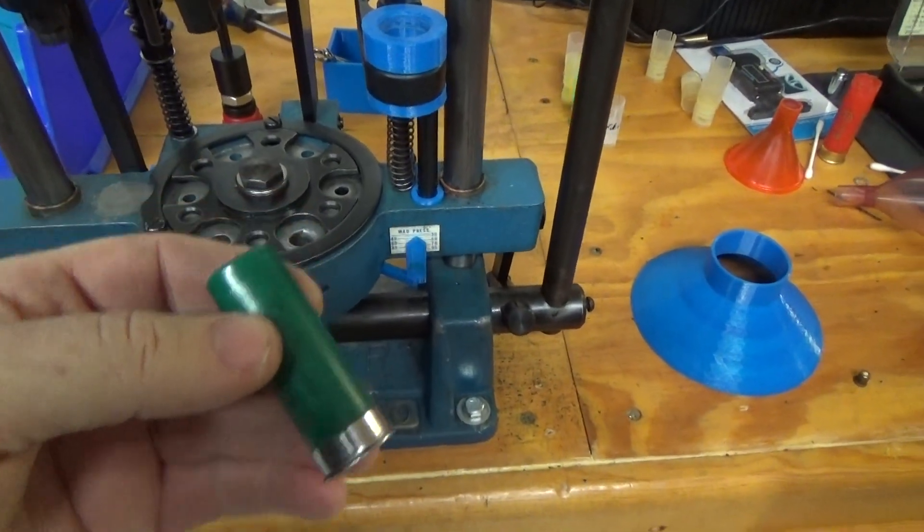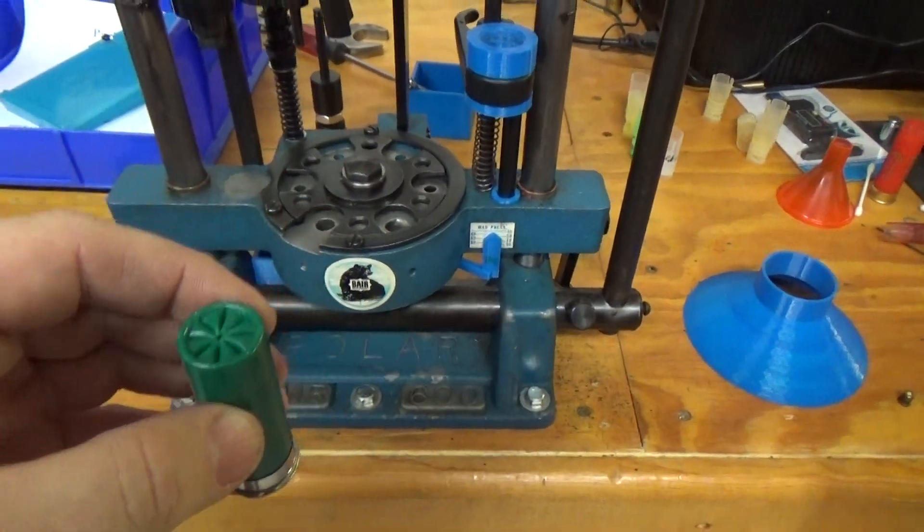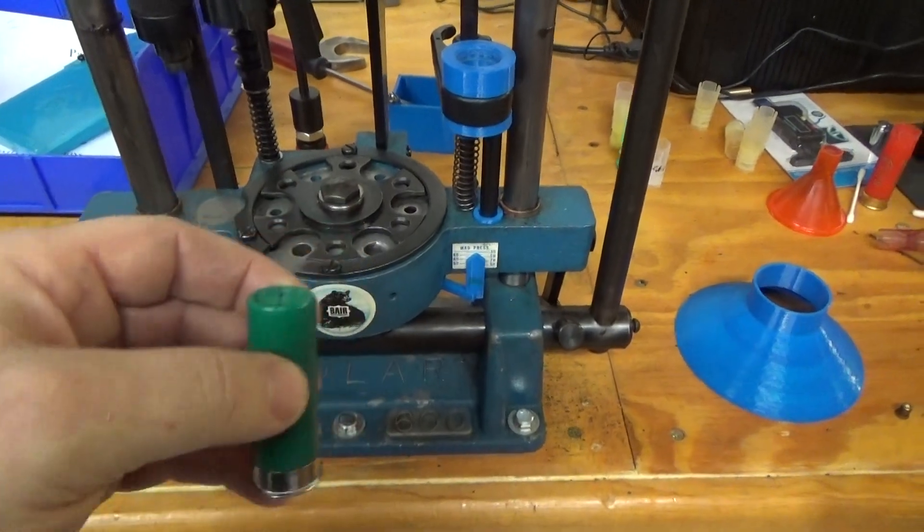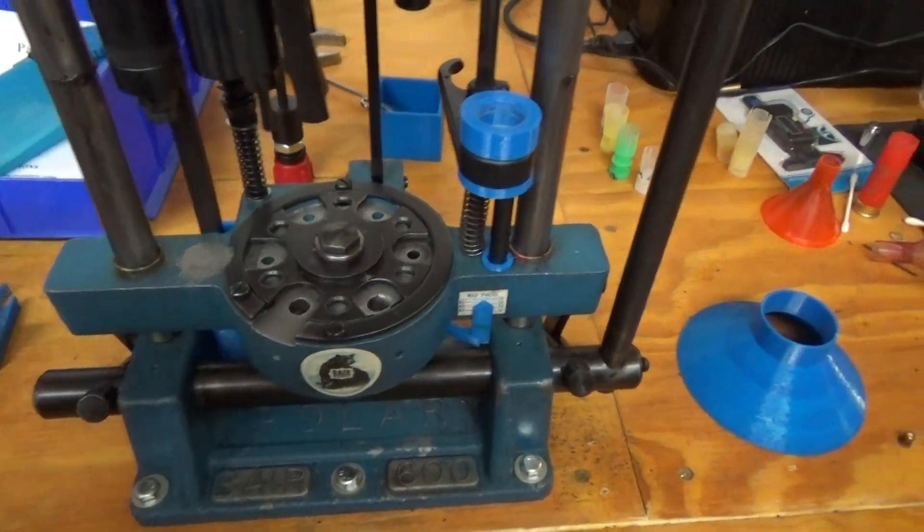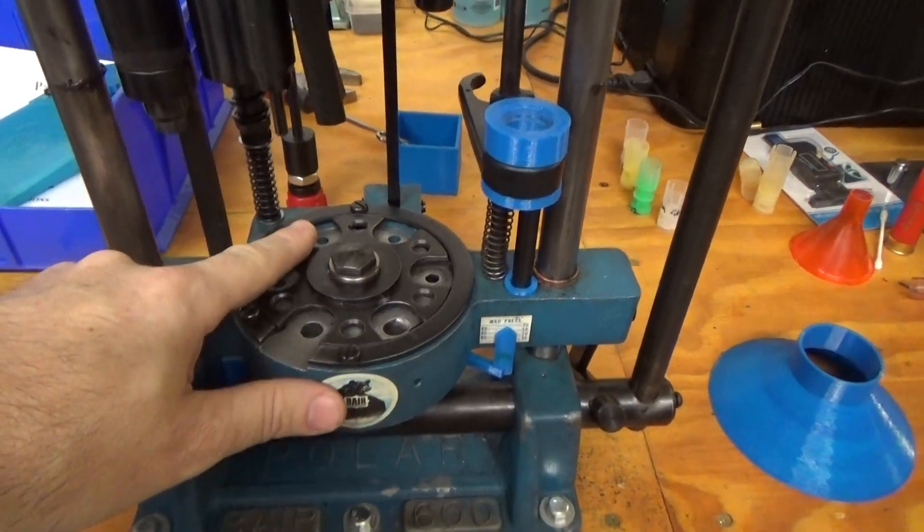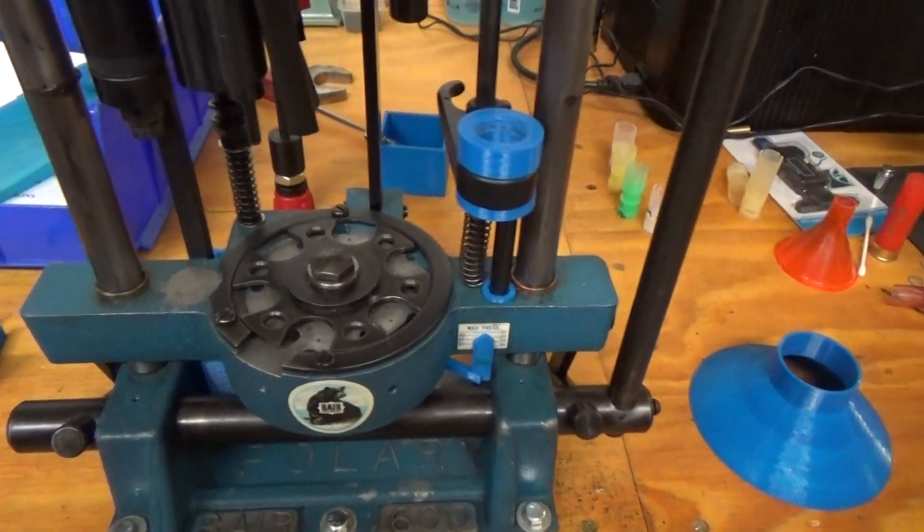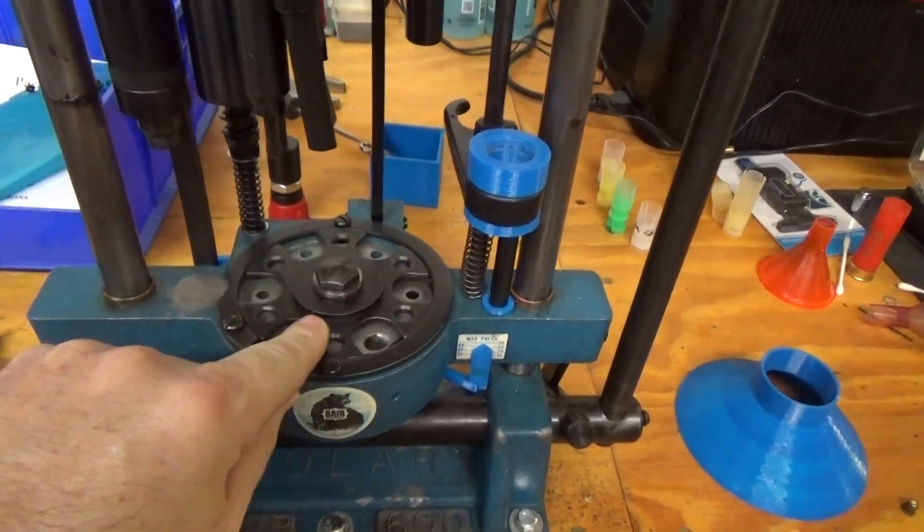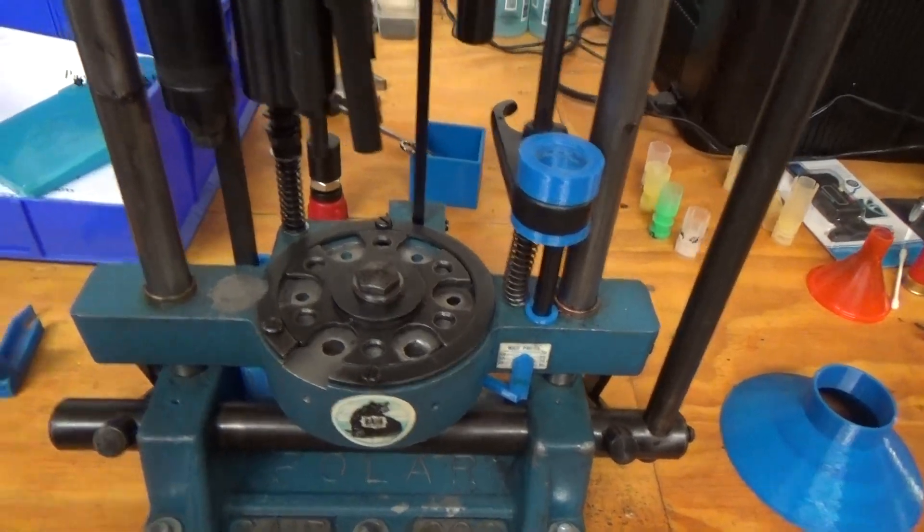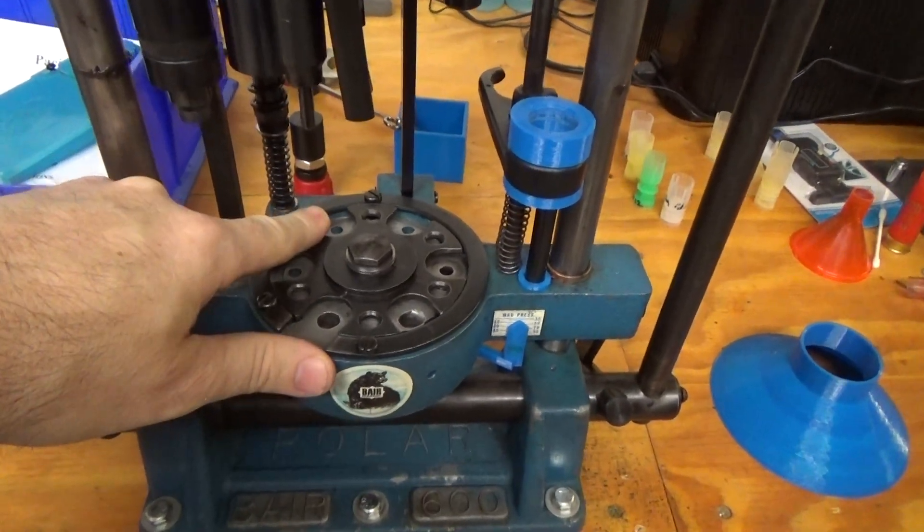Unless you have a really specific load for birdshot, it makes sense if you're a skeet shooter and you're shooting 300, 400 rounds a week, and you do not want to be beating the crap out of your shoulder. So you're loading the weakest load you can load with the lightest amount of shot that you can load to consistently beat up those clays when you're on. That might make sense.